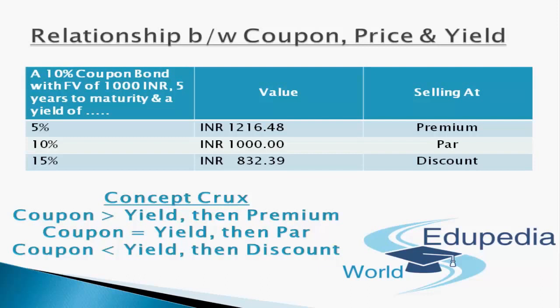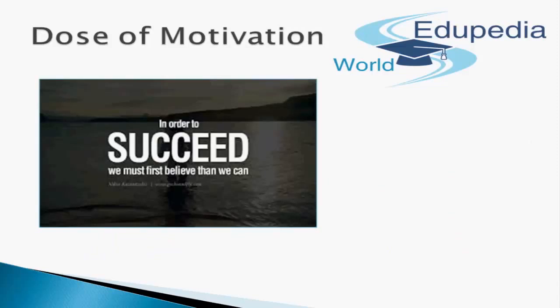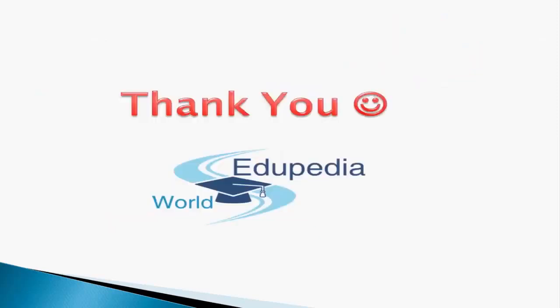That was all about the valuation of bonds and the relationship between coupon rate, price, and yield. In our next video, I will be discussing premium and discount in bond pricing, nominal yield, current yield, yield to maturity, and other related topics for bond valuation. To conclude — in order to succeed, we must first believe that we can. Believe in your aspirations, your dreams, your desires, and then you can prove to the world that you can achieve what you believe. Thank you and goodbye on behalf of the Eddupedia world. Have a nice day, take care.